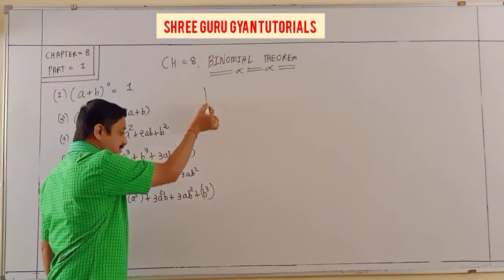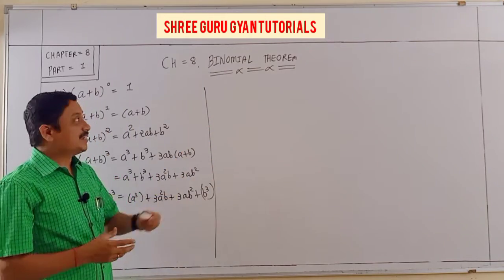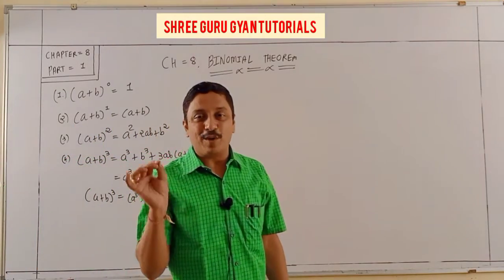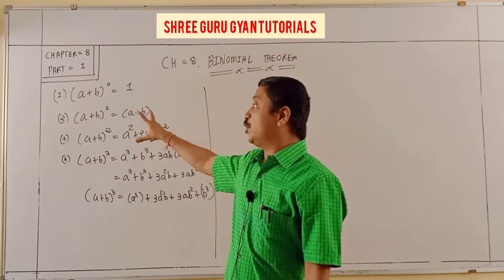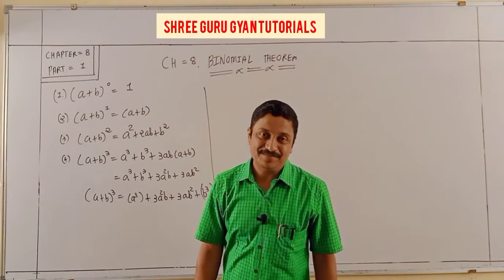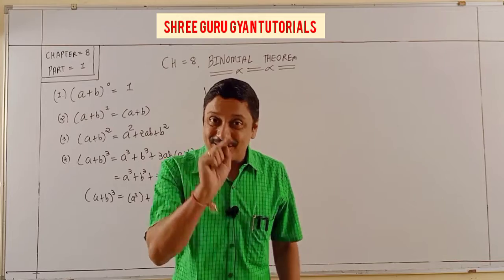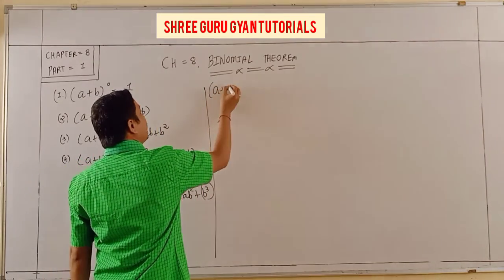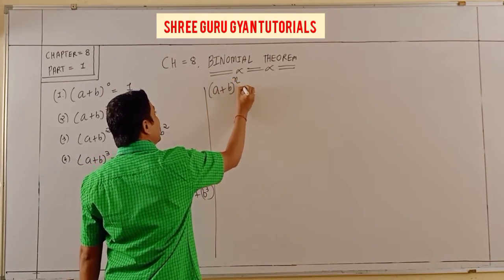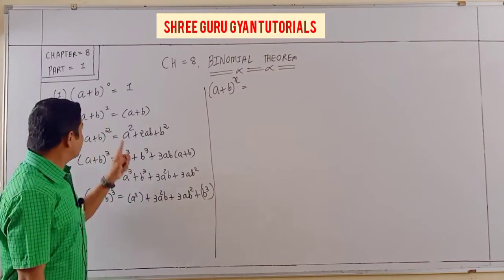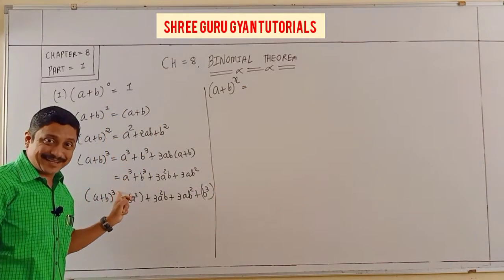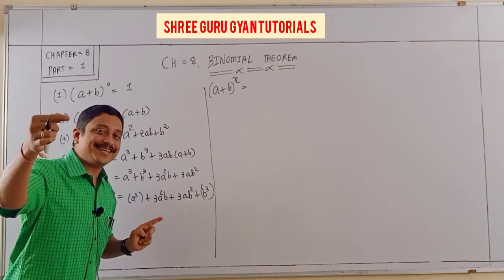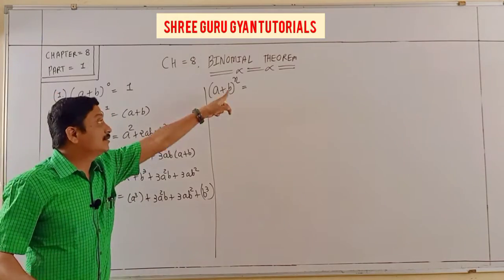Now, why do I explain this? Because my chapter's own terms — its properties — are connected by these small basic fundamentals. So in this chapter, the first formula is that any a plus b raised to n. Here I explain: 0, 1, 2, 3, further going 4, 5, 6, 7, up to n.